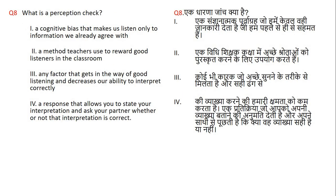Question number 8. What is a perception check? Option 1: a cognitive bias that makes us listen only to information we already agree with. Option 2: a method teachers use to reward good listeners in the classroom. Option 3: any factor that gets in the way of good listening and decreases our ability to interpret correctly. Option 4: a response that allows you to state your interpretation and ask your partner whether or not that interpretation is correct. The right answer is 4 — this is the perception check.